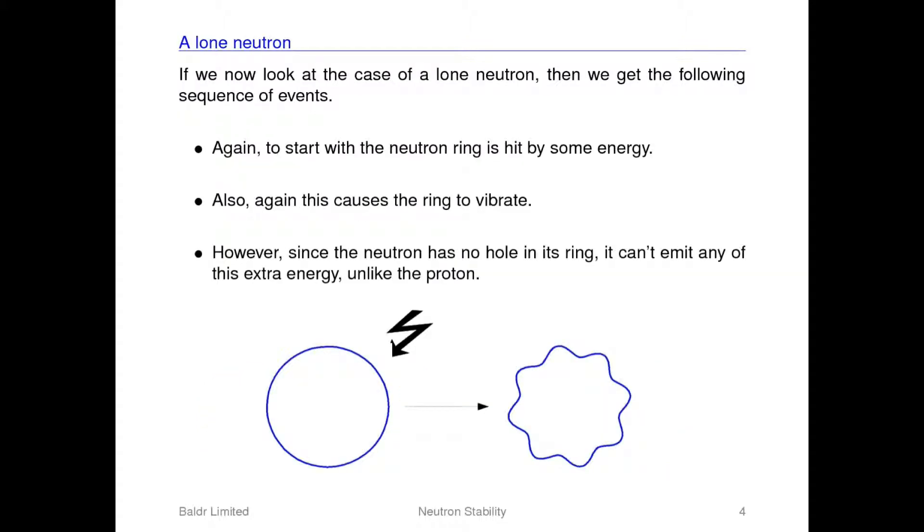If we now take the same sequence of events and apply them to a lone neutron then the following happens. So we've got this lone neutron ring shown on the left that is about to be hit by some energy which again causes the ring to vibrate.